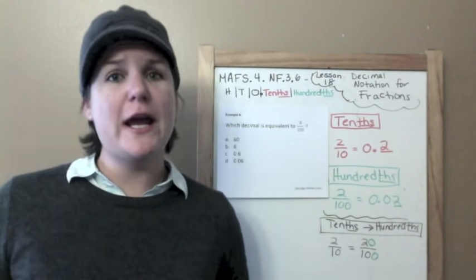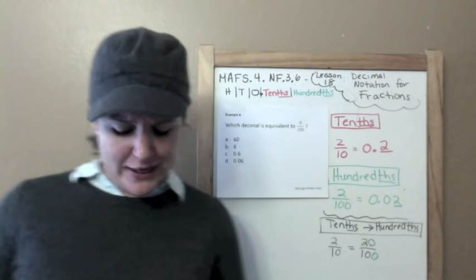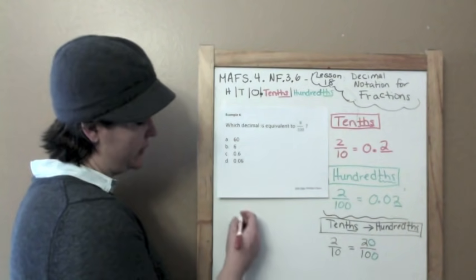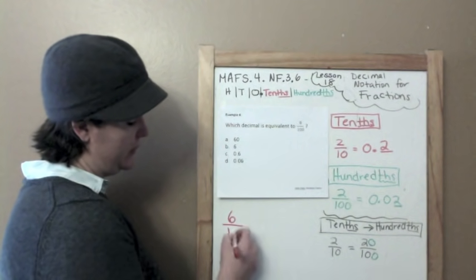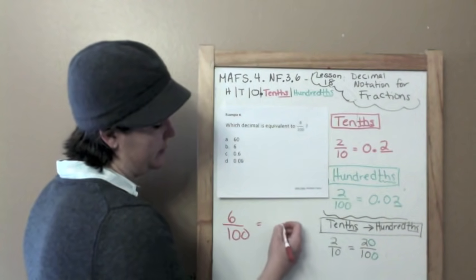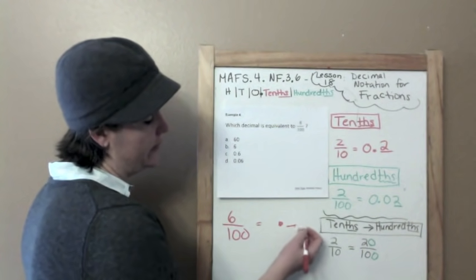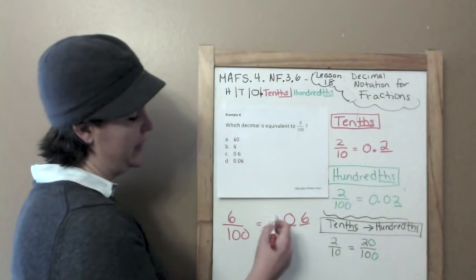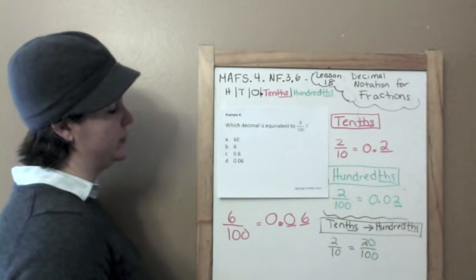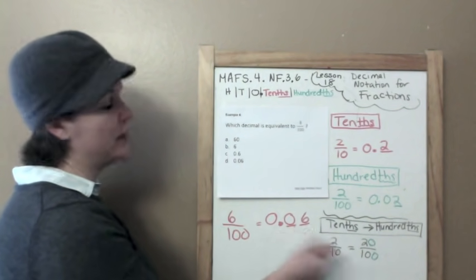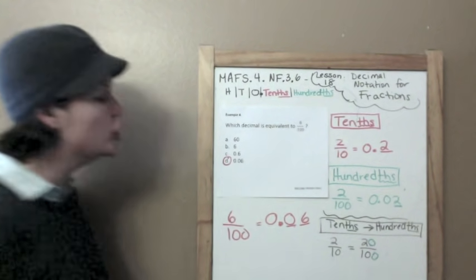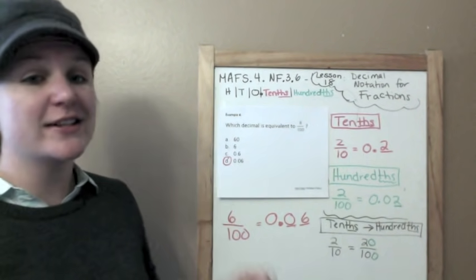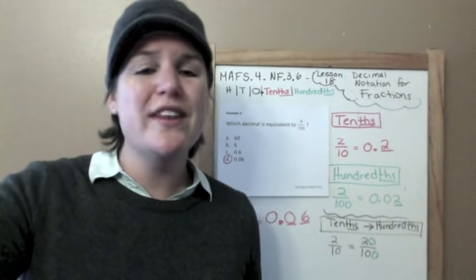Oh, time flies when you are having fun. Which decimal is equivalent to six hundredths? So six hundredths. To write that as a decimal. Here's my decimal point. So decimal to the right tenths, hundredths. So my six needs to go in the hundredths place, which means I need to fill this one with a zero. And my whole number, or my ones place, with a zero. So the one that conveys the same answer is D. A is sixty. B is six. C is six tenths. And D is six hundredths, which is the one that we want.